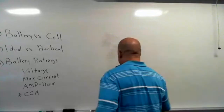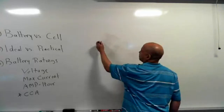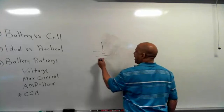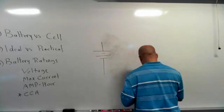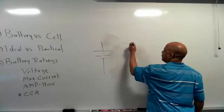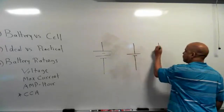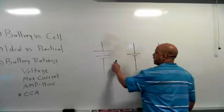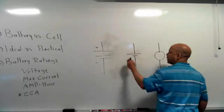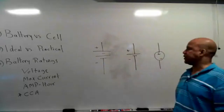Let's talk about the difference between the battery and the cell. I showed you three ways of representing a voltage source. We can show it like this — a long line represents the positive polarity, the short line is negative. Same here: positive, negative. In the circle version, you put the plus and minus in there. So these are all voltage sources.